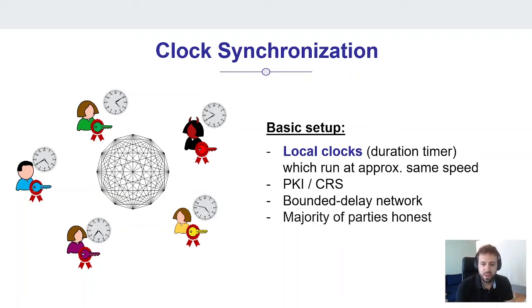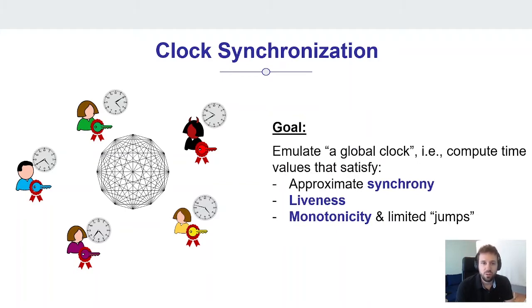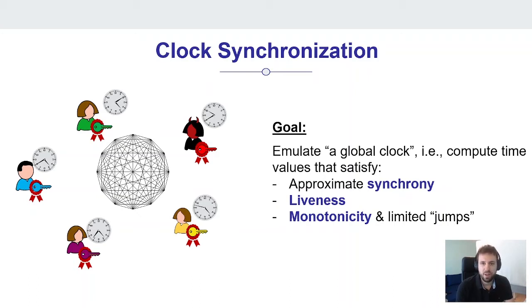We assume a protocol would be executed over a bounded delay network, and we assume that the majority of parties follow the protocol and hence are honest. The goal of clock synchronization is that these parties want to jointly emulate a global notion of time — they want to compute time values over the course of the execution, and if you ask two parties what they believe is the current time value, what they report should be very close together. This is what we call approximate synchrony.